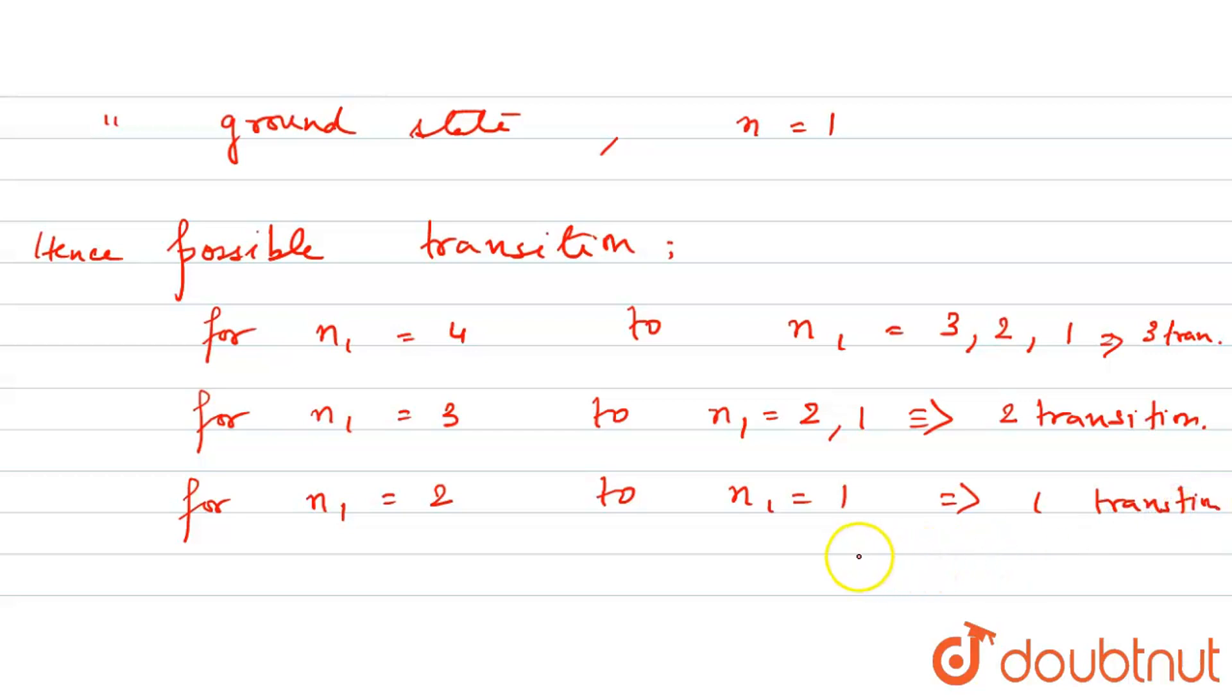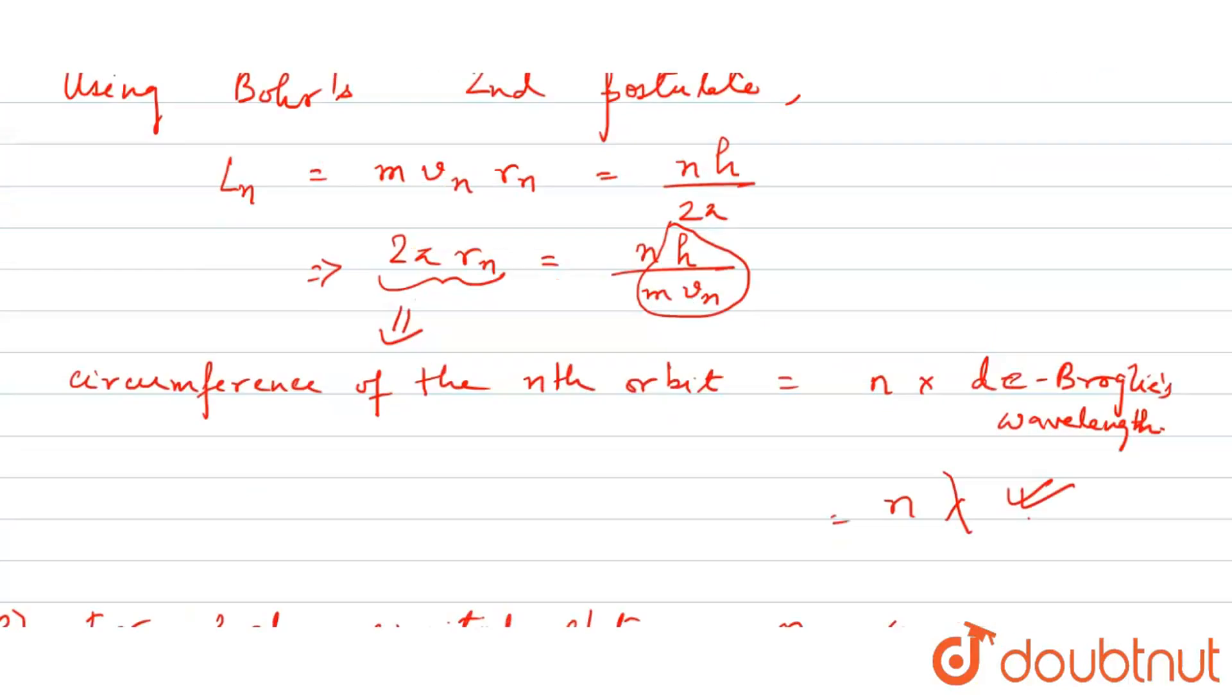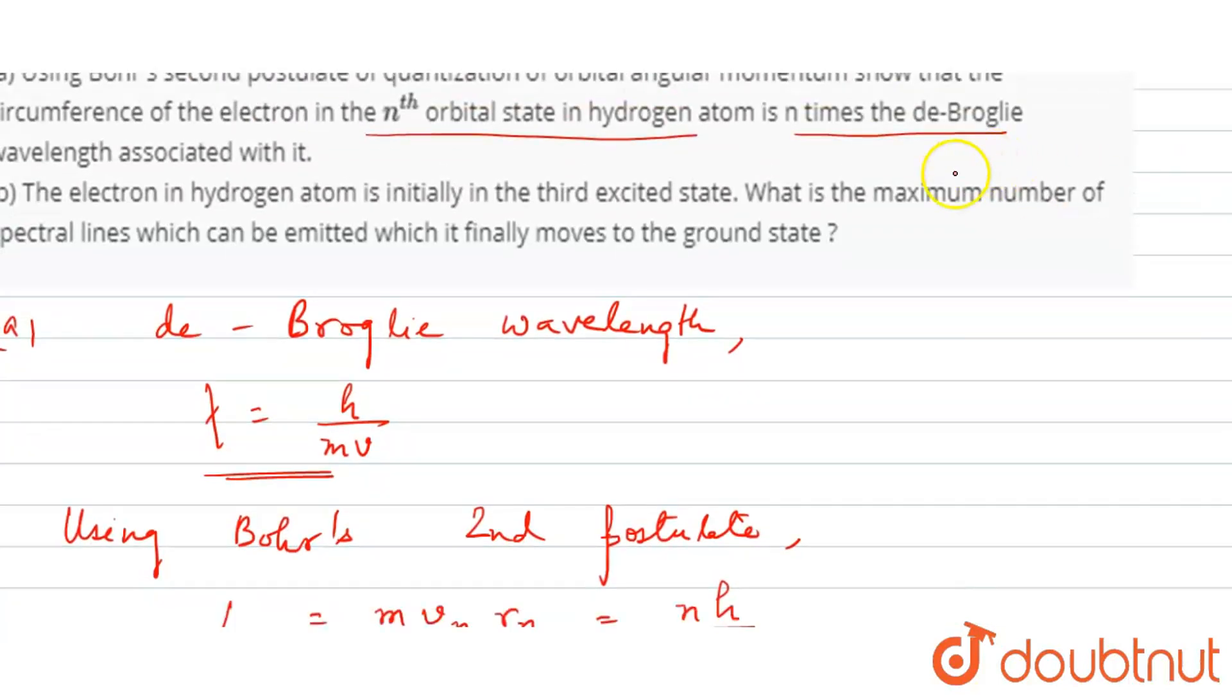What is it? 3 plus 2 plus 1 is equal to 6. So 6 number of transitions are required. How many maximum number of spectral lines emitted? Ok thank you.